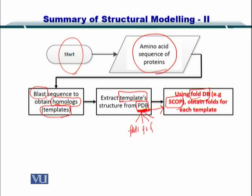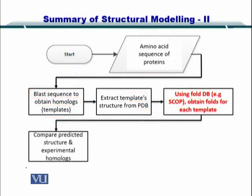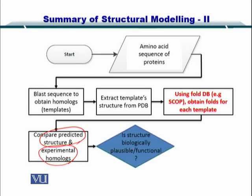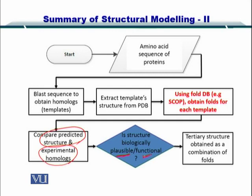For each PDB file you will have multiple folds: fold 1, fold 2, fold 3 — so you will have a list of folds that each structure has. Next, you compare the predicted structure and experimental homologues. If the structure that is predicted is plausible and functional, then you select it, and try to create a tertiary structure by creating combinations of the folds. And therefore your structure is made.